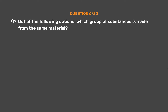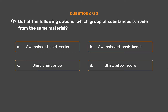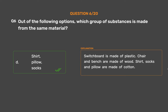Question number 6. Out of the following options, which group of substances is made from the same material? Option A: Switchboard, shirt, socks. Option B: Switchboard, chair, bench. Option C: Shirt, chair, pillow. Option D: Shirt, pillow, socks. The correct answer is Option D: Shirt, pillow, socks. Switchboard is made of plastic. Chair and bench are made of wood. Shirt, socks, and pillow are made of cotton.